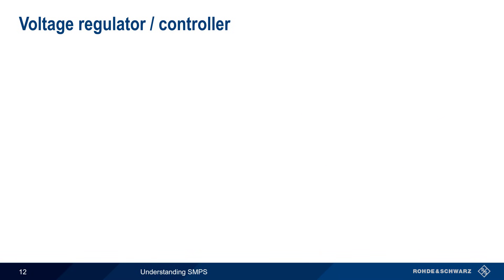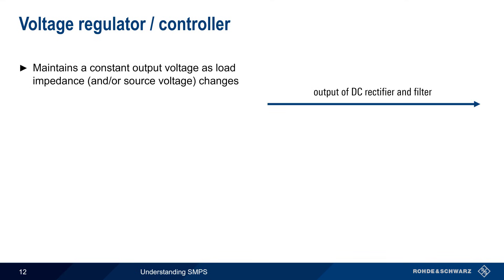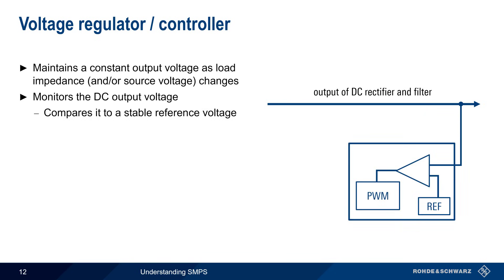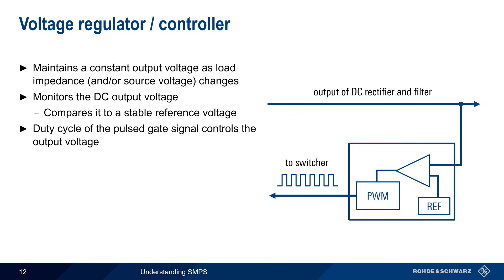The final stage is the voltage regulator or controller. This section helps to maintain a constant output voltage as the load impedance and/or the source voltage changes. It does this by monitoring the DC output voltage and comparing it to a stable reference voltage. Recall that the output voltage level is controlled by the duty cycle of the pulse signal present at the gate of the switcher. Therefore, if the regulator detects that the output is too high, it will decrease the duty cycle of the pulse signal.